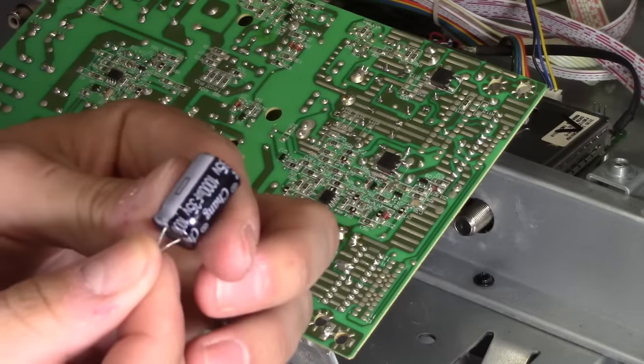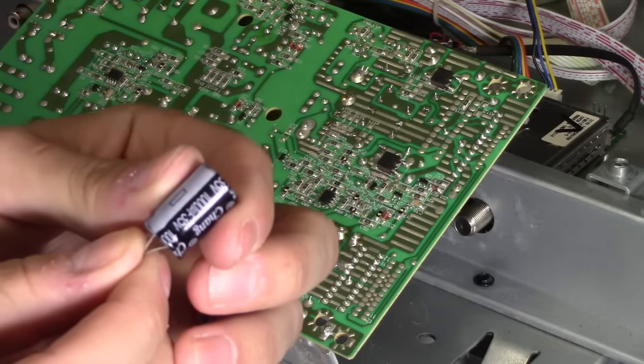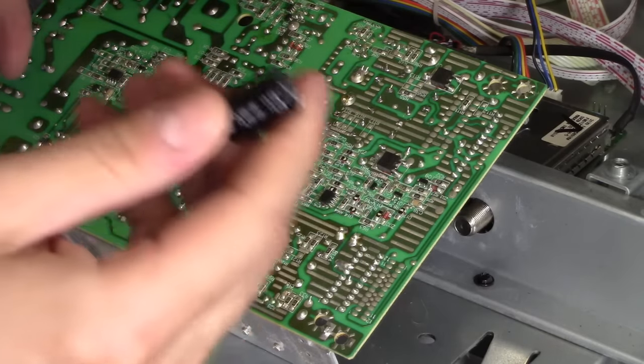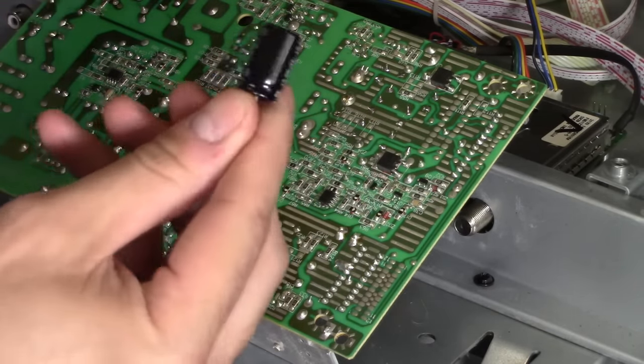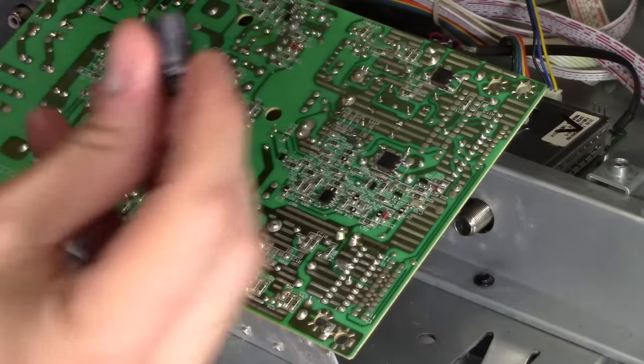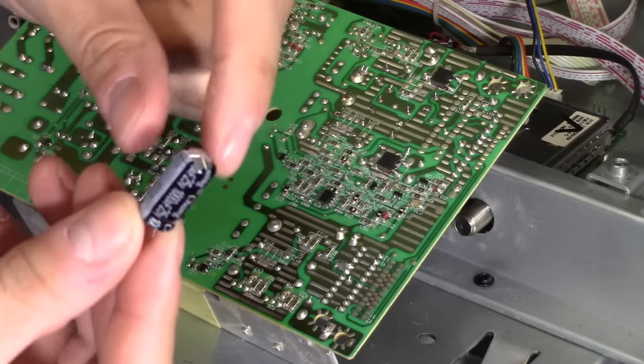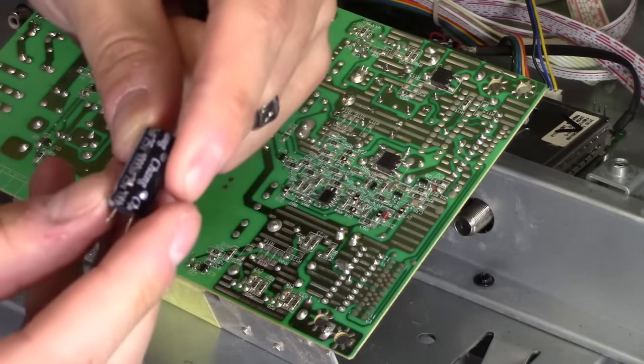So I got a capacitor, 1,000 microfarads, 35 volts. So I upped it on the voltage. So now 35 volts can pass through this without it blowing up. If there was 35 volts running through this capacitor, it would blow up. It gets swollen and it did. It's done.